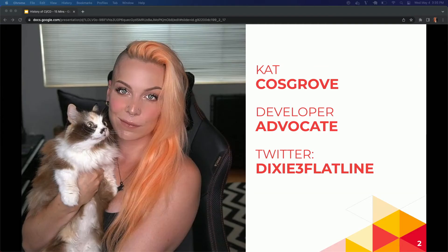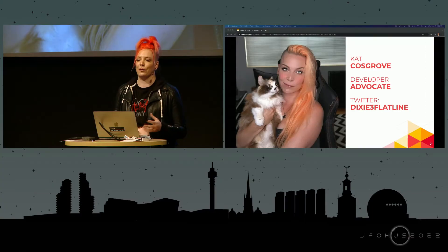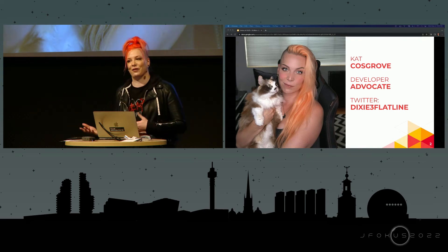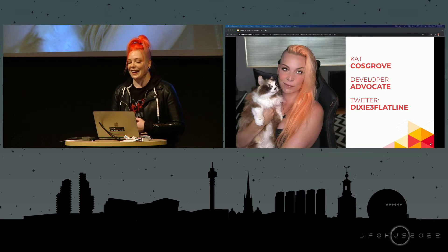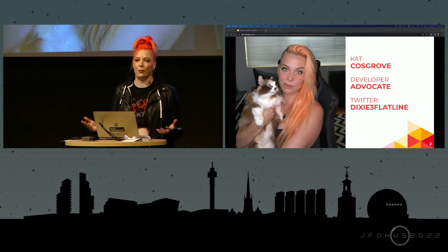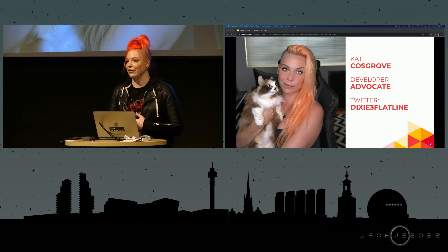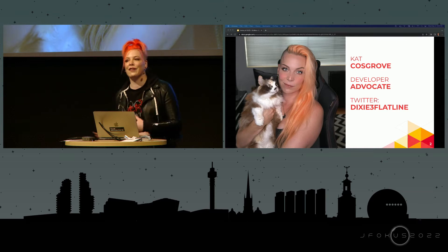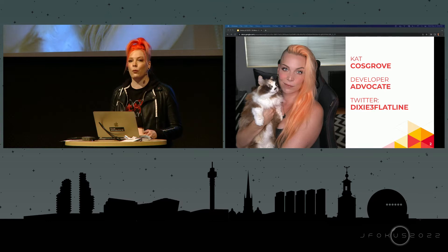A little bit about me first. My name is Kat Cosgrove. That's my cat, Espresso. I'm a developer advocate at Pulumi. But I didn't get here through strictly traditional means. I did go to college, but I dropped out, and it wasn't for computer science. I ended up freelancing as a web developer, been a bartender and a teacher, and an embedded Linux engineer — pretty all over the place. The advantage of that is it allowed me to see the tech industry from some pretty weird angles.